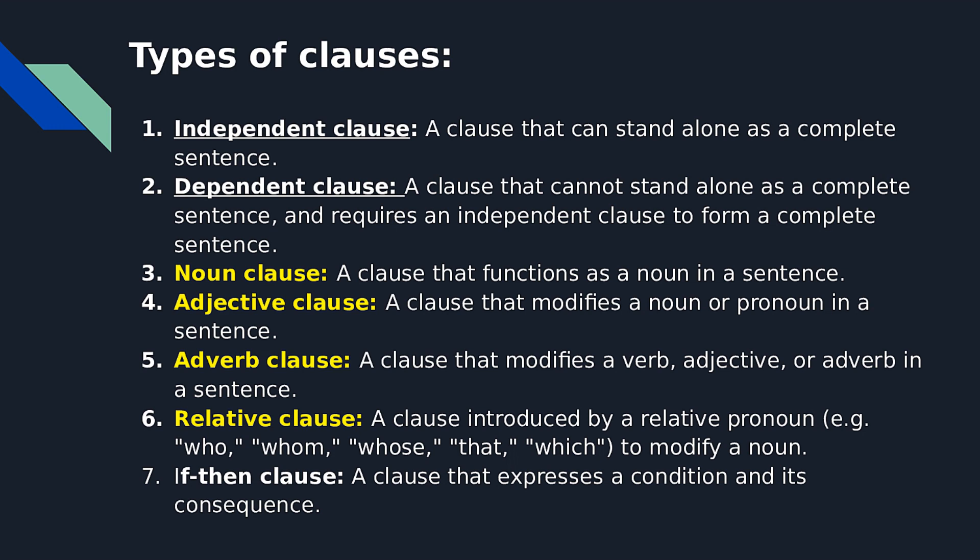Number 2: Dependent clause, which is a clause that cannot stand alone as a complete sentence and requires an independent clause to form a complete sentence. Number 3: Noun clause, which is a clause that functions as a noun in a sentence.